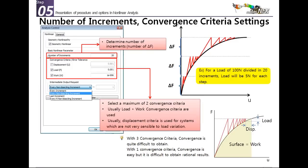You must select two convergence criteria. Usually load plus work is used, or displacement plus work. Don't use all three criteria because it makes convergence very difficult, and don't use only one because the accuracy of the results will be reduced.